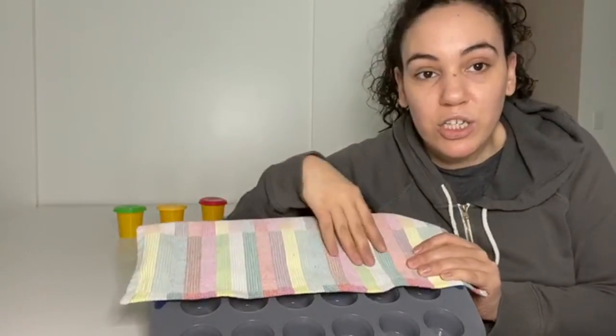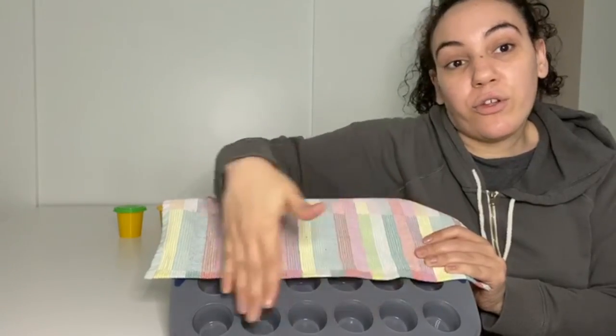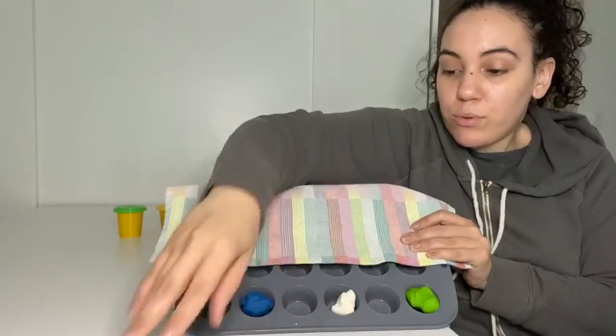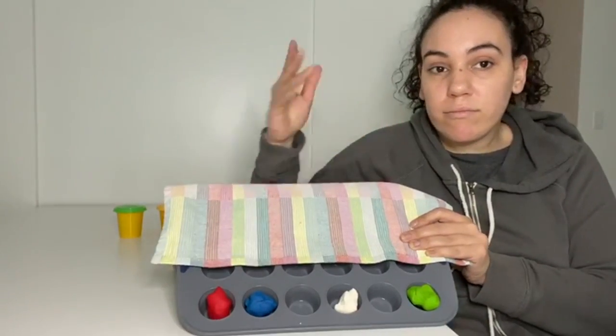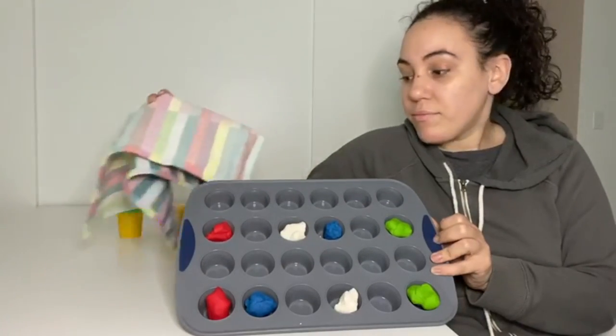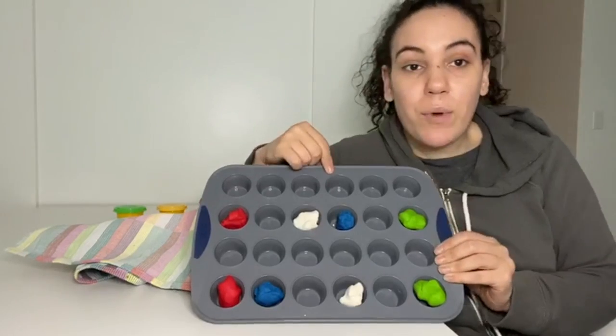And then this is where the child will put the colors into the correct order that he saw it in. So green, white, blue, and red. Let's see. Oh, I got mine wrong, so I would ask the child...